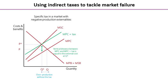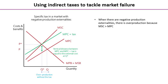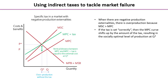When there are negative production externalities we have overproduction because marginal social cost is greater than marginal private cost. If we are able to set the tax correctly, then the MPC curve will shift up by the amount of the tax and in theory that results in the socially optimal level of production at Q star, meaning the market failure has been corrected.